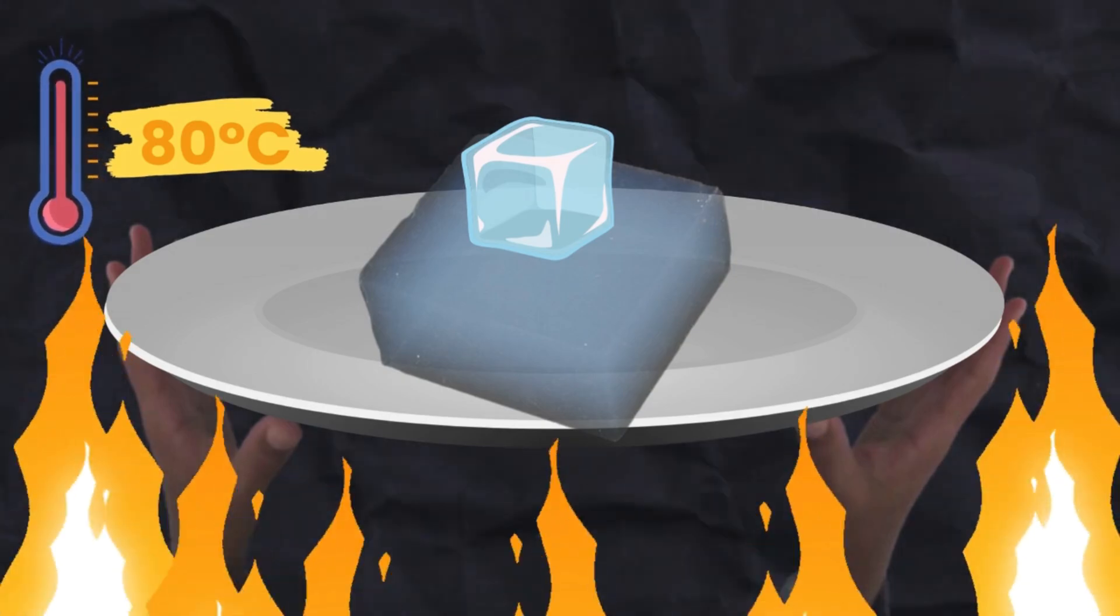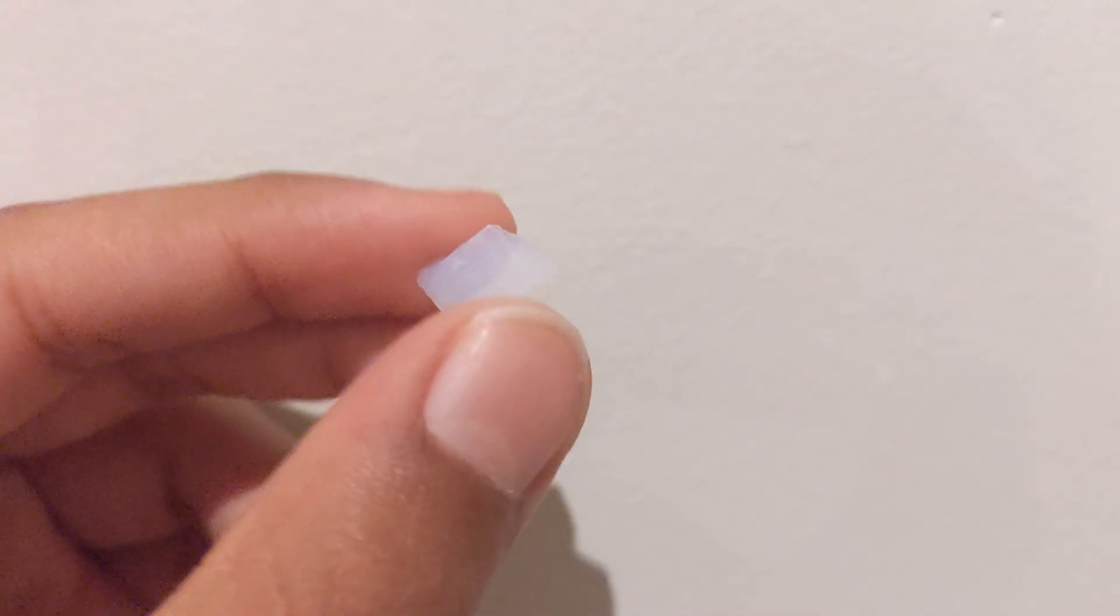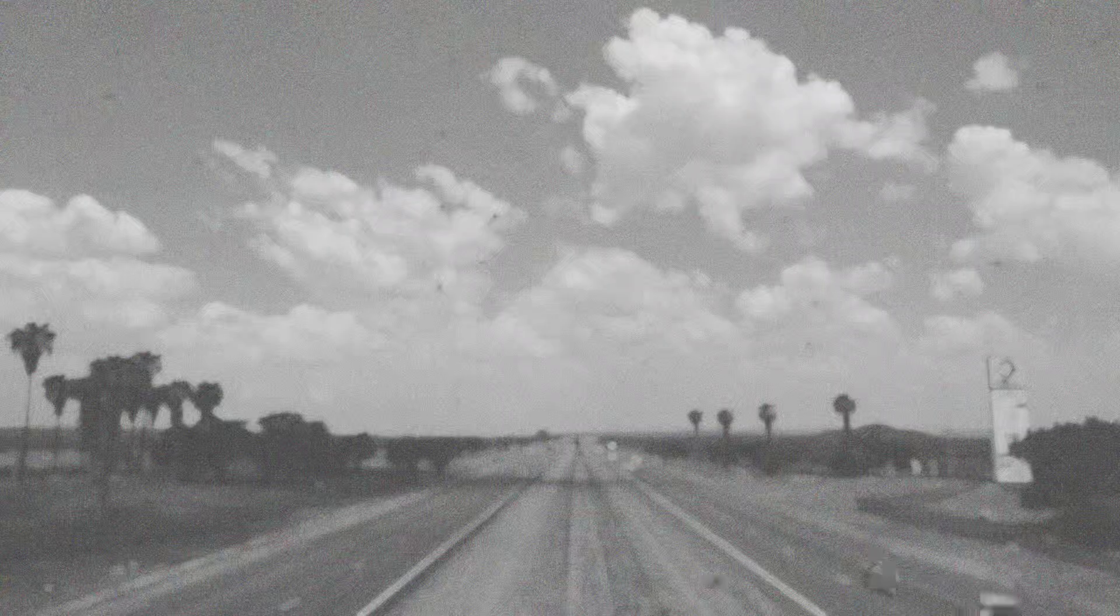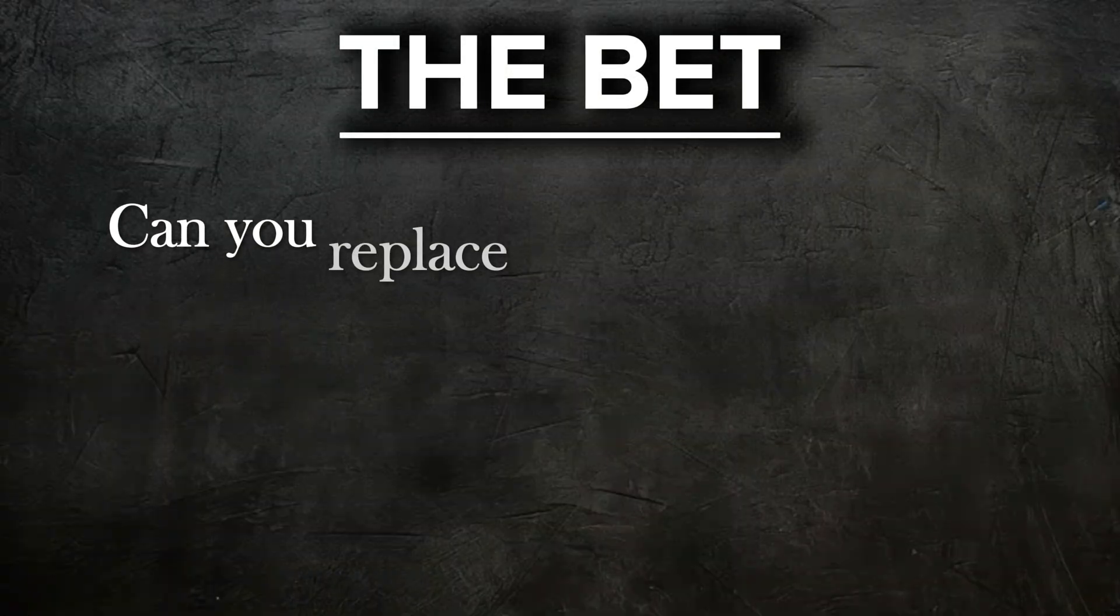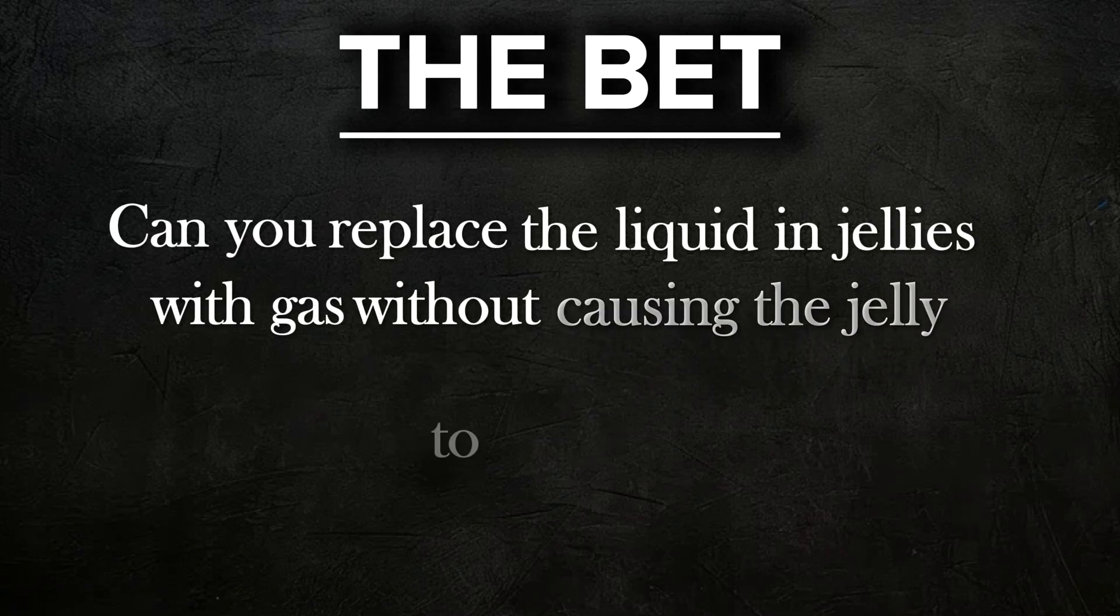But why was such a material invented? And how was it made? Well, in 1931, scientist Samuel Kistler had a bet with his friend, Charles Leonard. The bet was about jelly. Yes. Jelly. The bet was this. Can you replace the liquid in jellies with gas without causing the jelly to shrink?